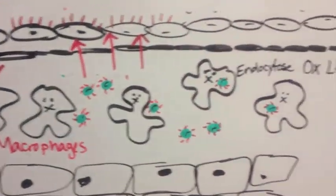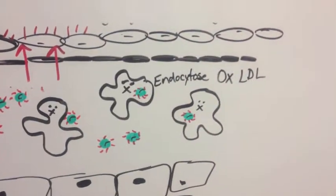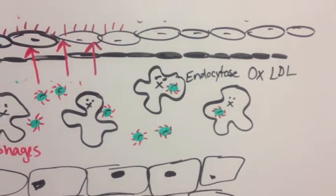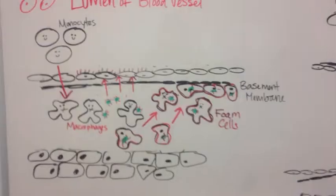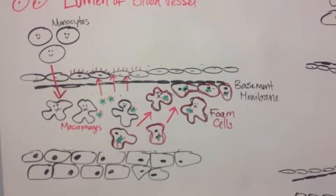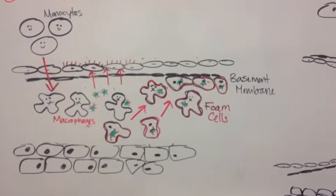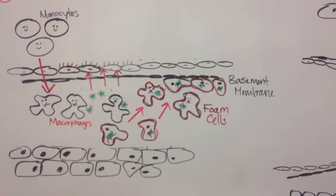They then endocytose the oxidized LDL particles to become foam cells. After the macrophages become foam cells, they migrate to the basement membrane.